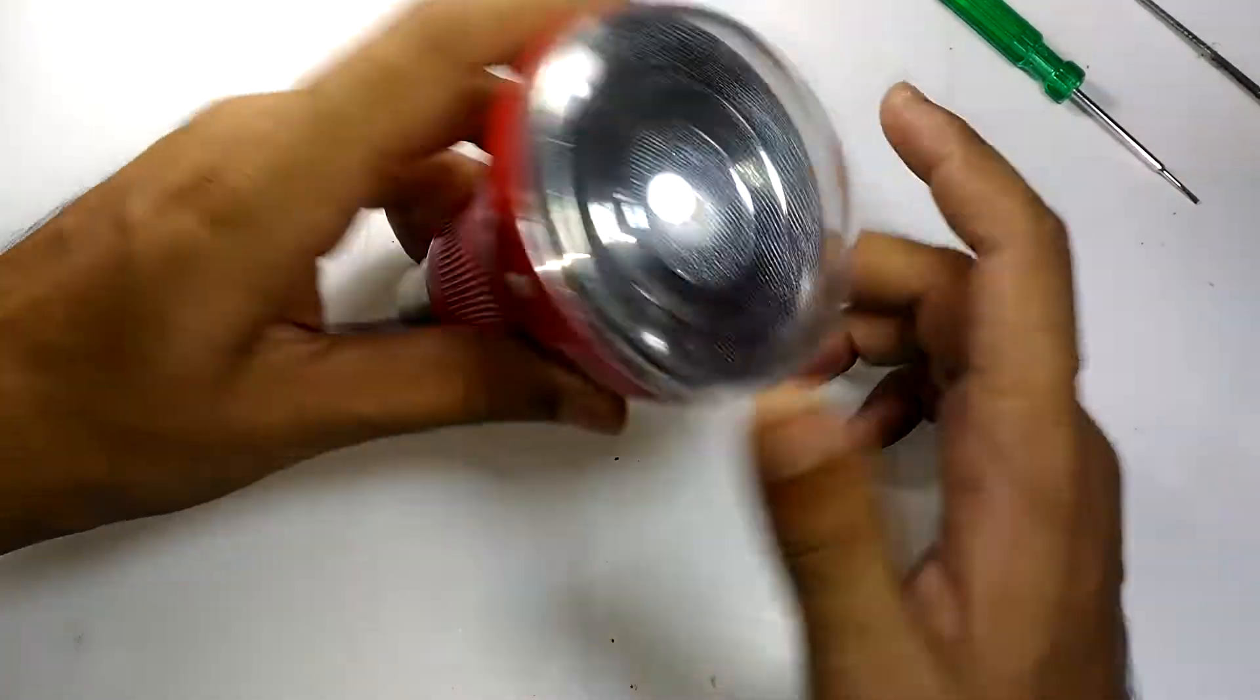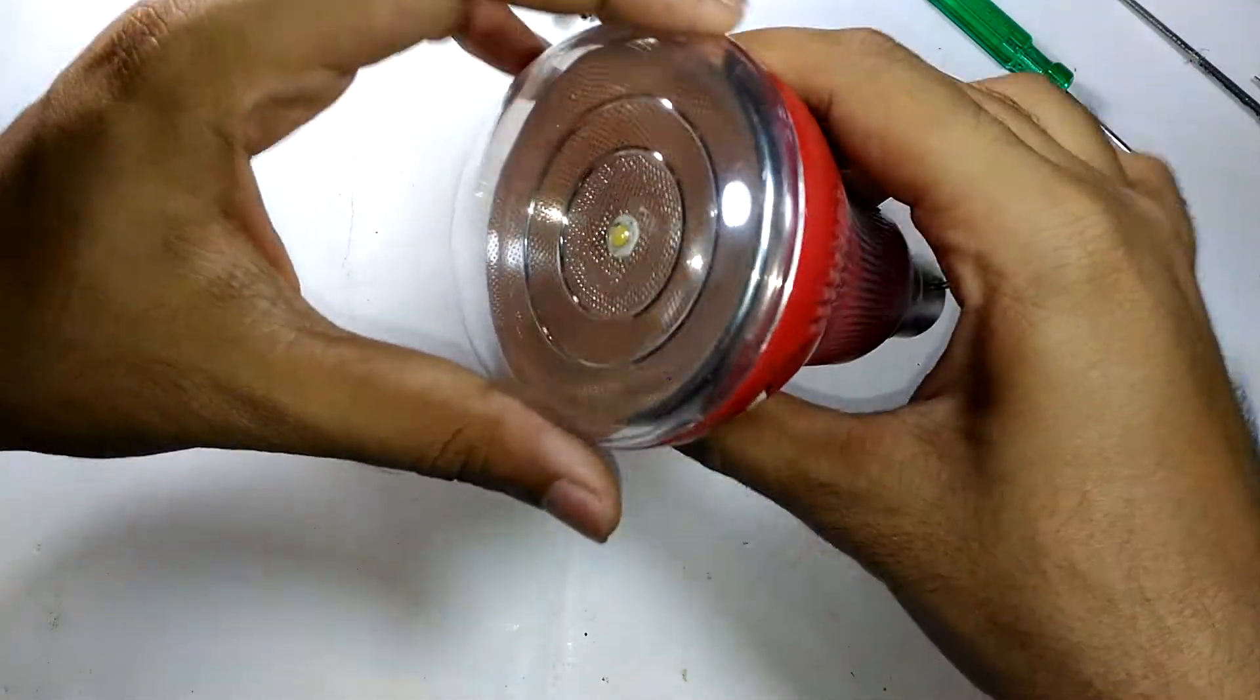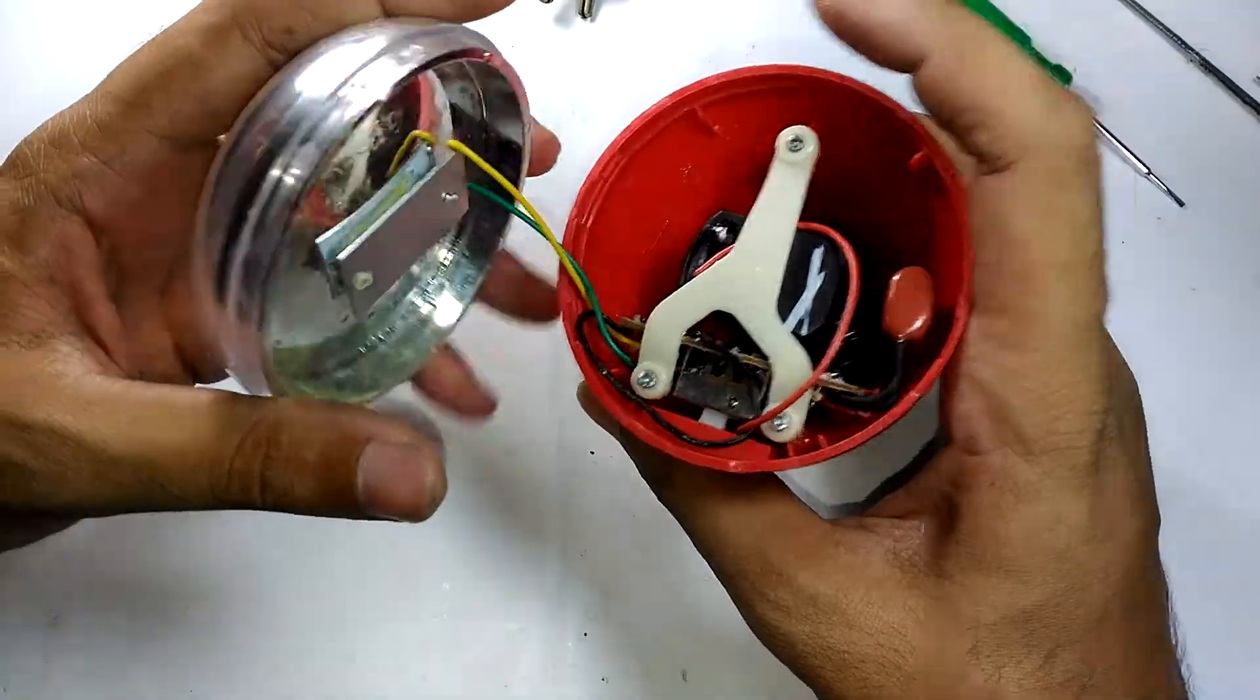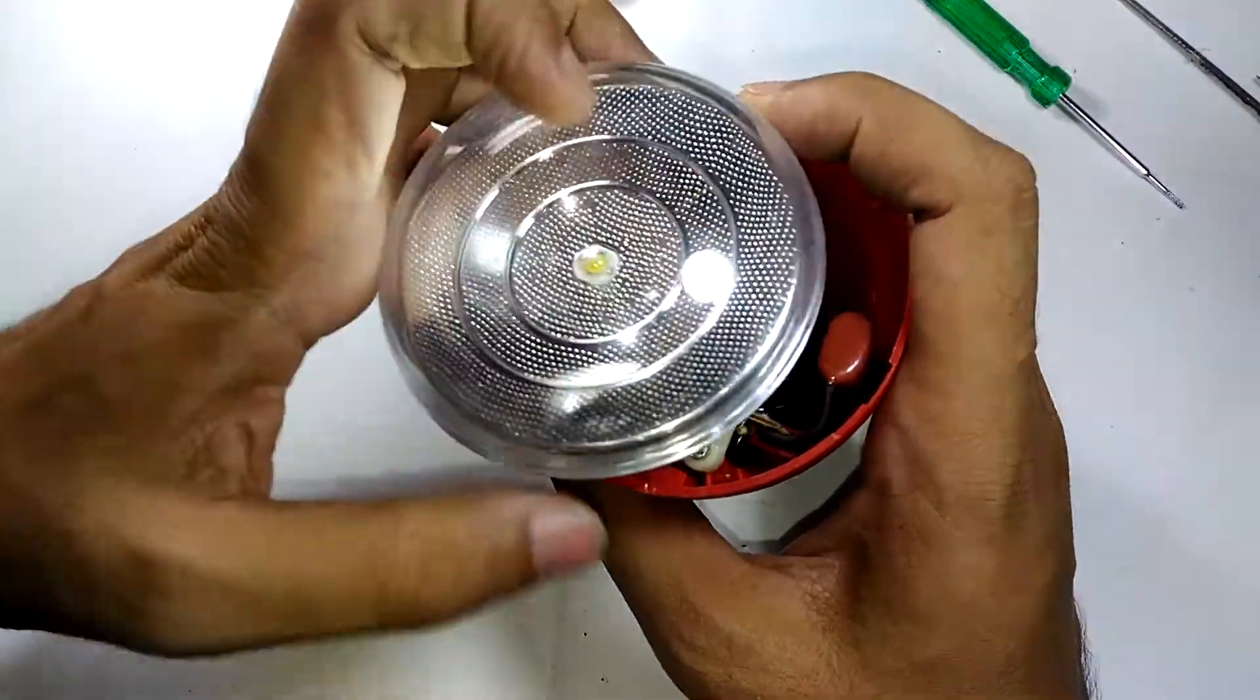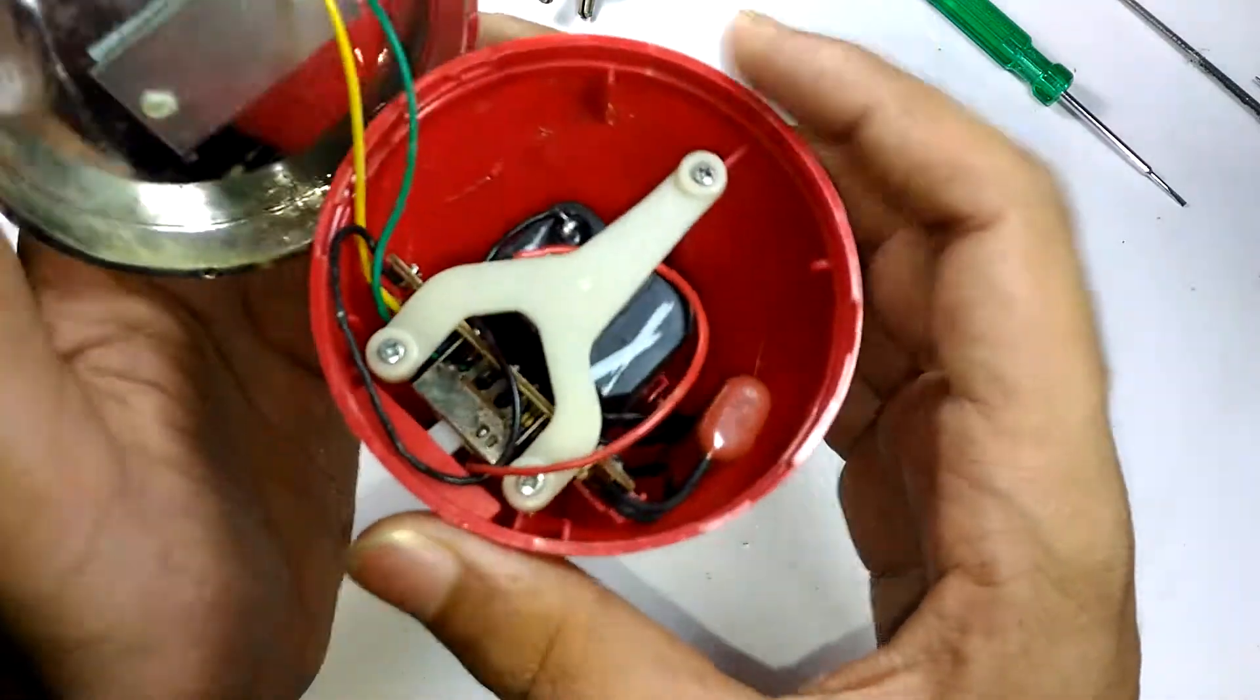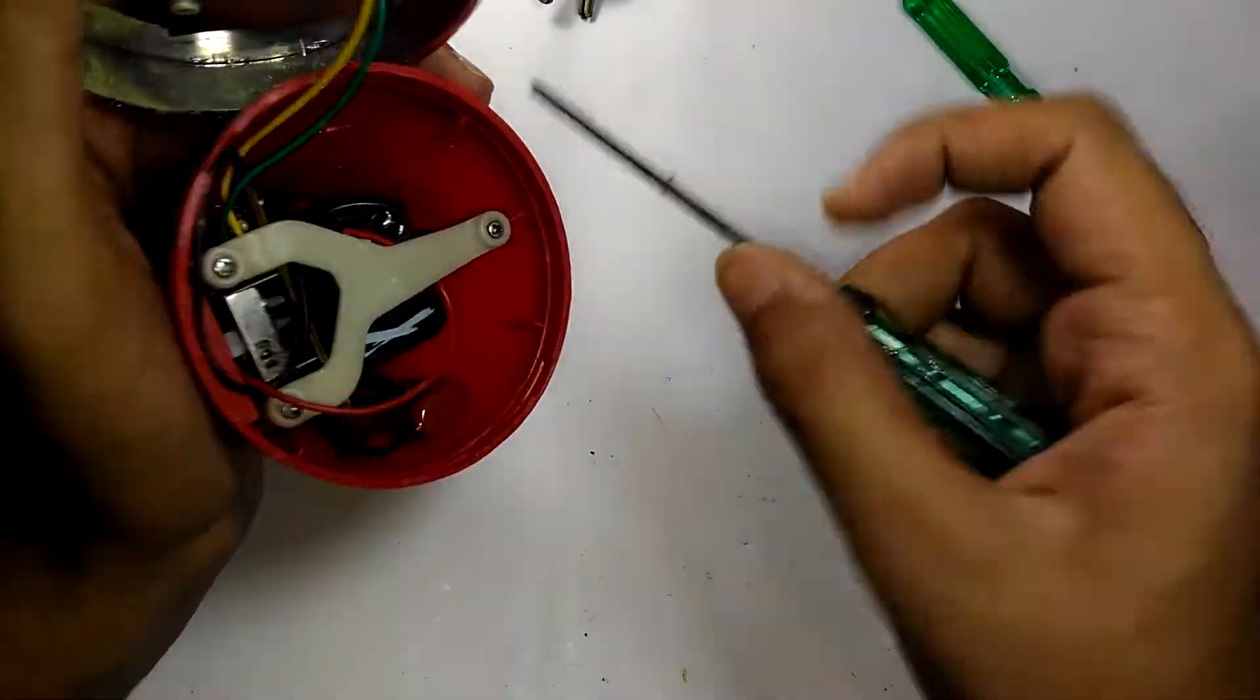Let's take a look at what's inside. It opens this way—you can turn this thing and it just comes right out. This has only one LED here. As you can see, we have three screws that need to be taken out.